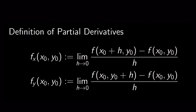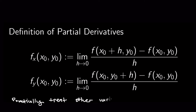So that's qualitatively what's going on with the function — that's the partial derivative with respect to y. Now how do we actually calculate partial derivatives? All we do is treat the other variable like it's a constant. We treat other variables like constants, and that's how we calculate partial derivatives.